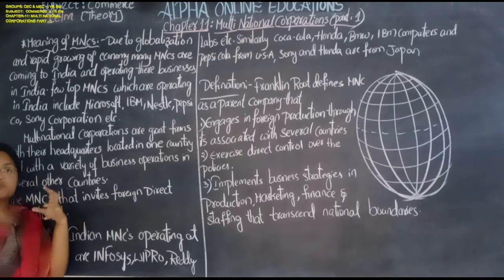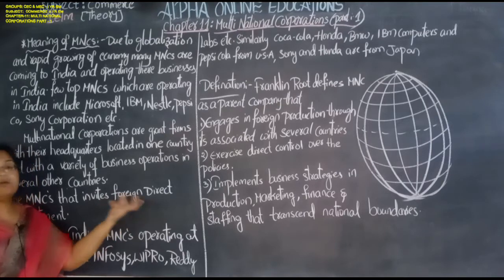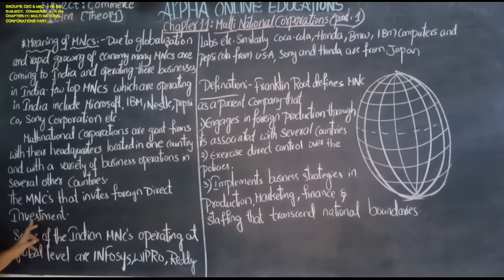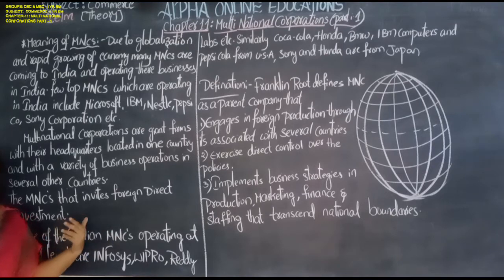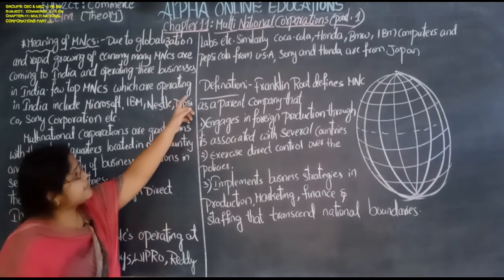In this way, we are getting investment from MNC companies, and that investment is foreign direct investment — whatever investment you receive directly from foreign countries in their currency value, whether in dollars, yen, or whatever. These will be asked for two marks. Some Indian MNCs have their headquarters in India but carry on business operations in different countries. Examples include Infosys, Wipro, and Dr. Reddy's.